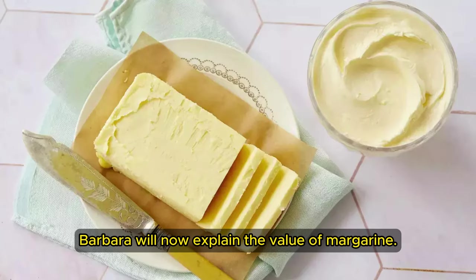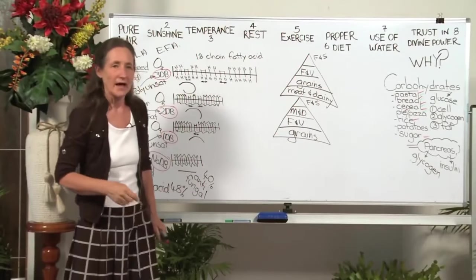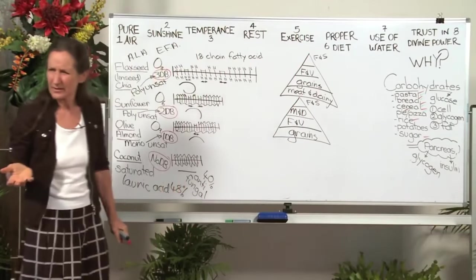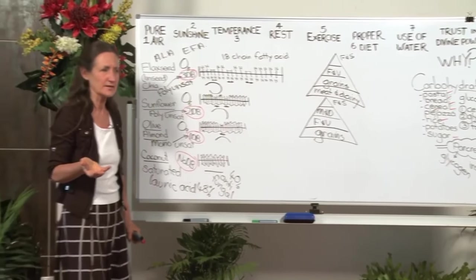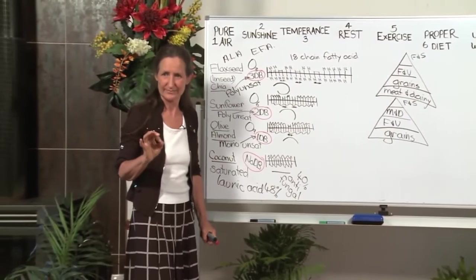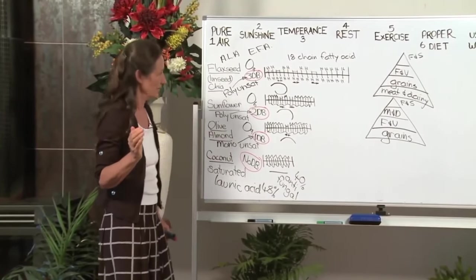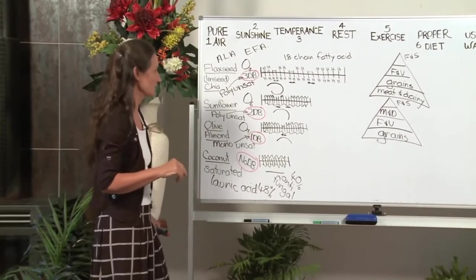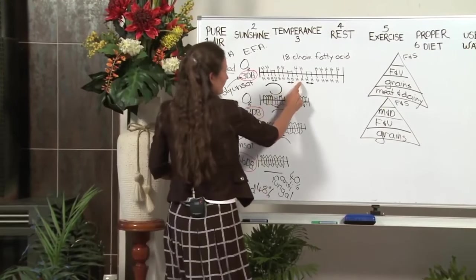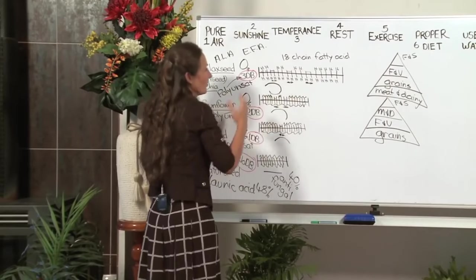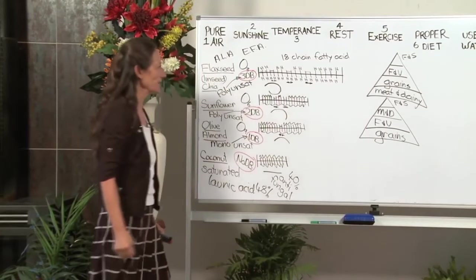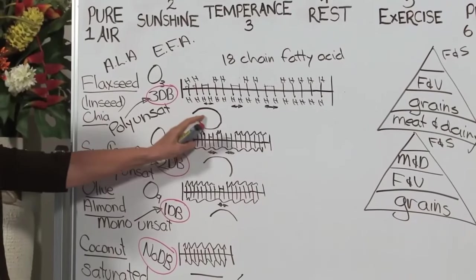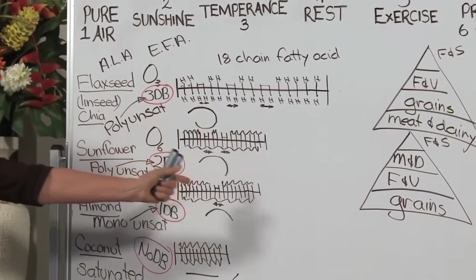Barbara will now explain the value of margarine. And what was introduced I think in about the late 80s, 90s was margarine as an alternative. Is margarine any good? Well let me show you how it's made. Let's make margarine out of this flaxseed oil. Well we've got a problem, and the problem is the oil is liquid, so we have to make it solid.